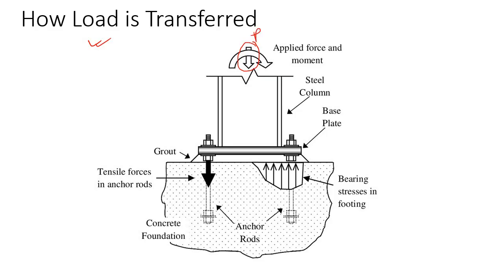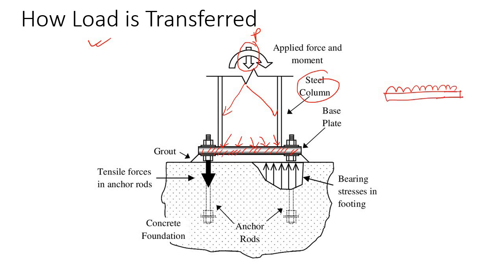First, consider a compressive force. When you apply this compressive force, it travels to the column, and from the column to the base plate. The compressive force is distributed to the base plate, which is then subjected to a uniformly distributed load placed over the concrete foundation. Due to this uniformly distributed load, the reaction force generates bearing stresses in the footing — this is the effect of the compressive force alone.